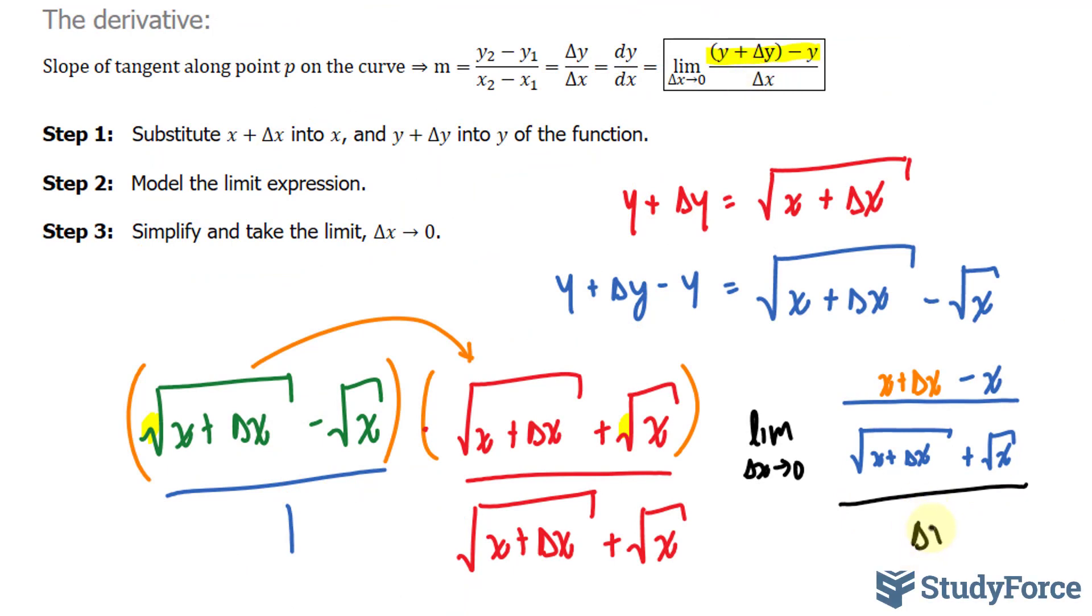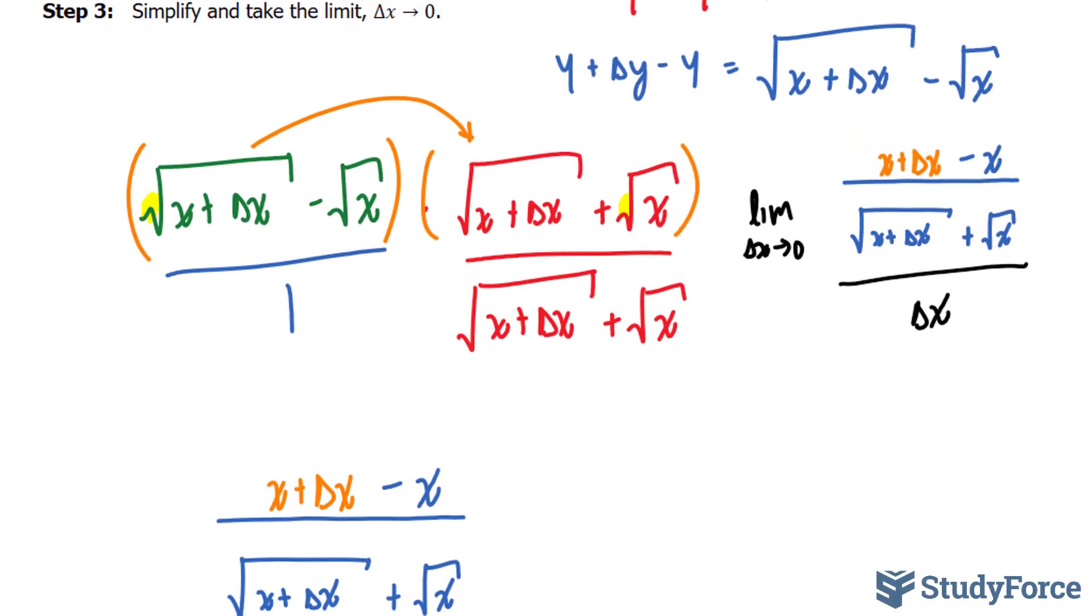Here we have a fraction divided by a monomial, an expression with one term. So what happens here is this expression goes underneath. So once again, the limit as delta x approaches 0, we have this part, x plus delta x minus x. And notice that this x and this x will cancel out now, over this expression times delta x. At this point, you should also notice that this delta x and this delta x will cancel out.